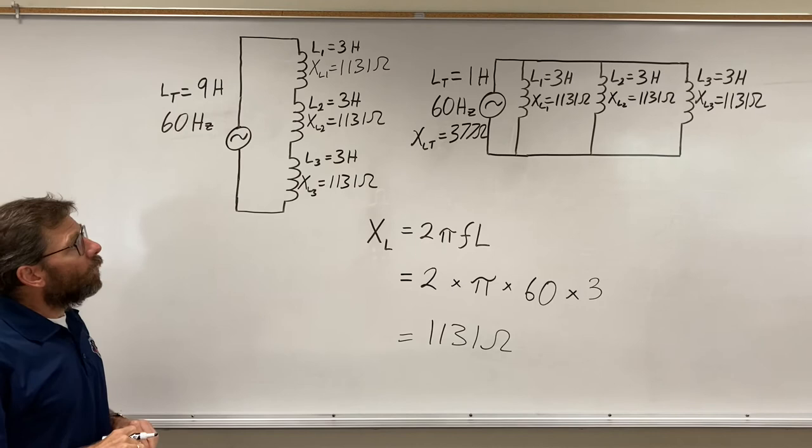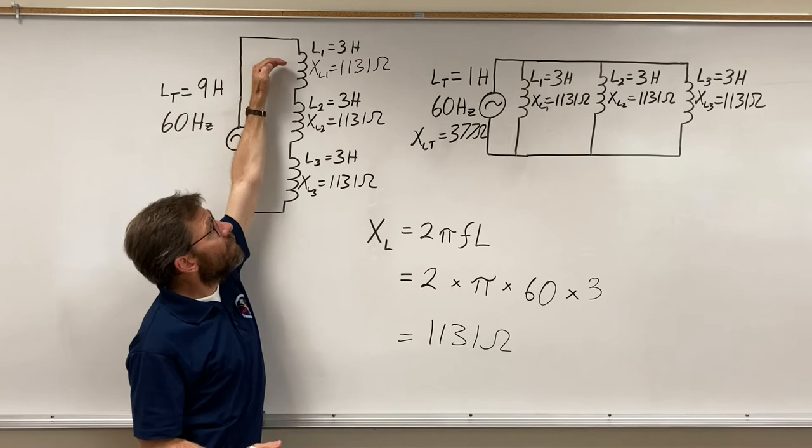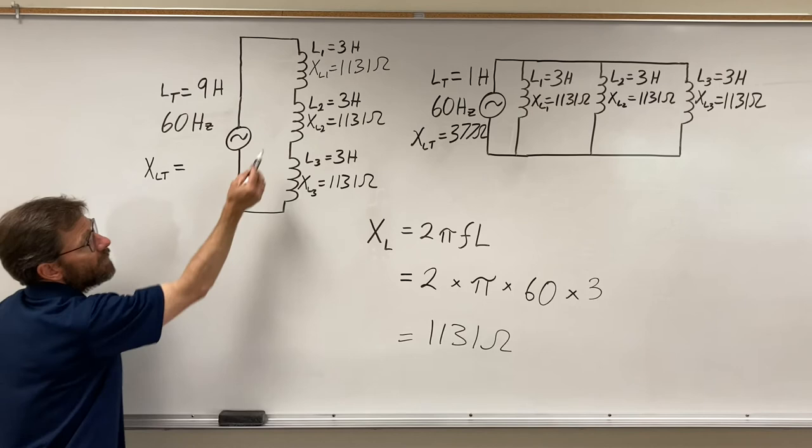Now when you have ohms in series you add them up because as your current's going it has opposition here, more opposition, more opposition. So I'm going to argue that my XLT is an addition of those things: 1131 plus 1131 plus 1131.